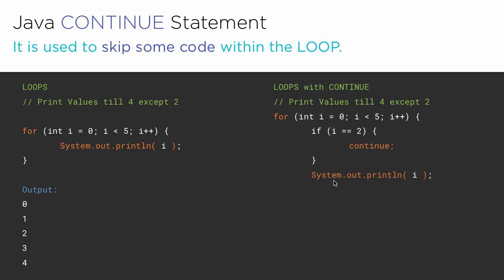The same program can be written as: if i is equal to 2, then simply continue. And then here is the print statement. Now what happens is that when the value of the counter variable becomes 2, the continue statement will simply skip all the code right after it — so the print statement won't be executed and integer 2 won't be printed in the output console. In the output we will get 0, 1, 3, and 4. Compared to the break statement, the continue statement only skips one loop iteration at a particular point.